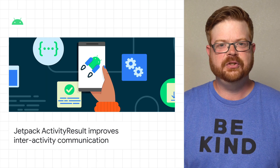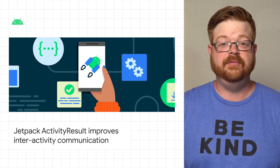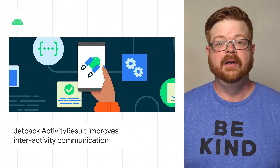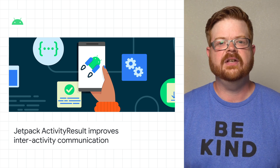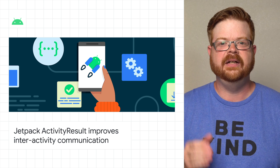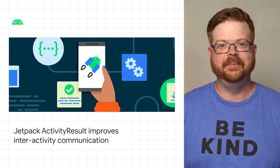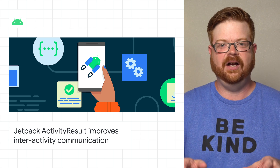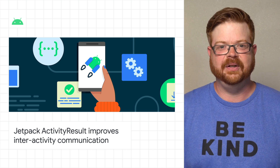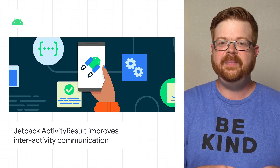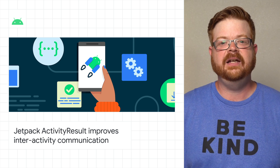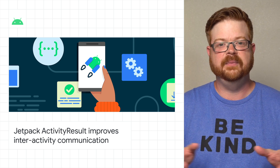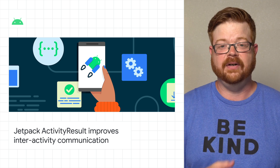Whether you're requesting a permission, selecting a file from the System File Manager, or expecting data from a third-party app, passing data between activities is a core element in inter-process communication on Android. We've recently released the new Activity Result APIs to help handle these activity results. These new APIs were added to the Jetpack Activity and Fragment libraries, making it easier to get results from activities by providing type-safe contracts.